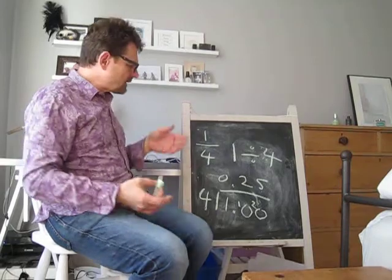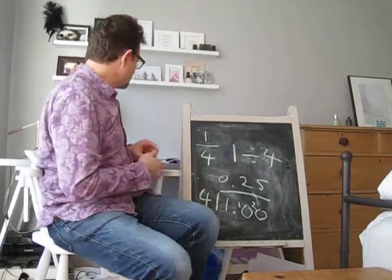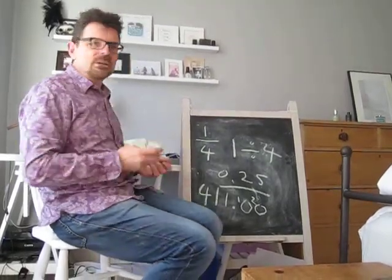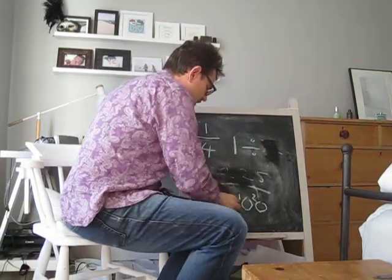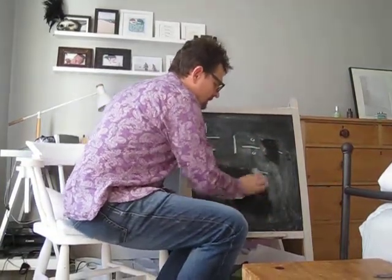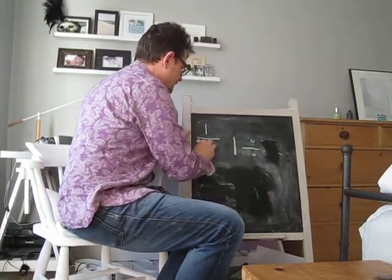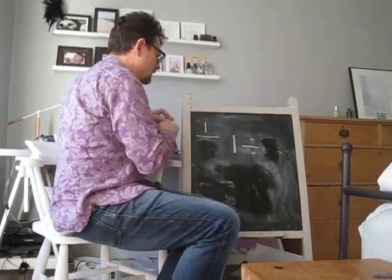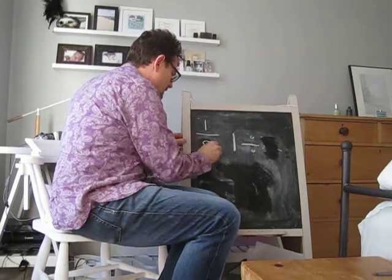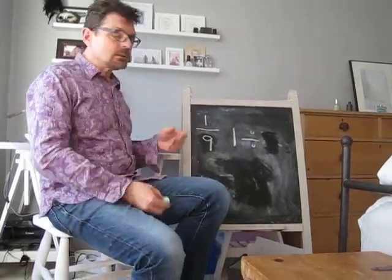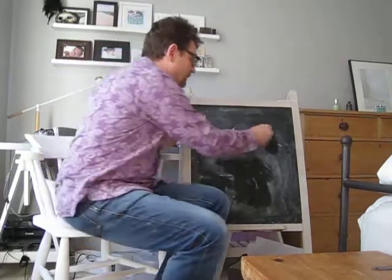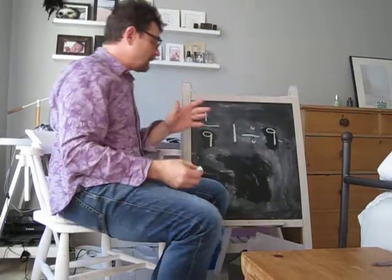So let's have a go at another fraction that might be a little less obvious. Let's have a look at one ninth, which is one of my favorite fractions, and you'll find out why that is in a minute. So one ninth, again, one ninth is exactly the same as saying one divided by nine. Let's write that there and we can test it out by doing a short division sum.